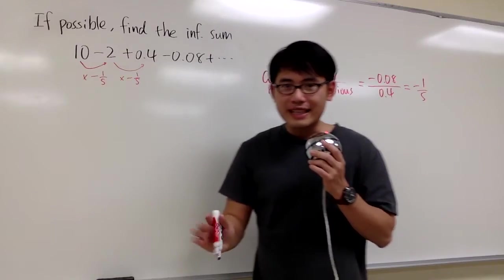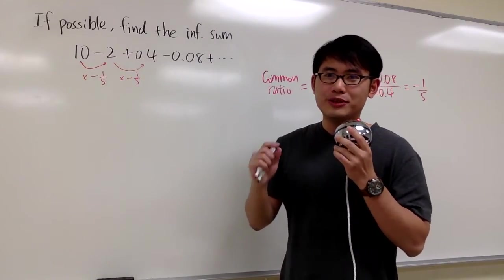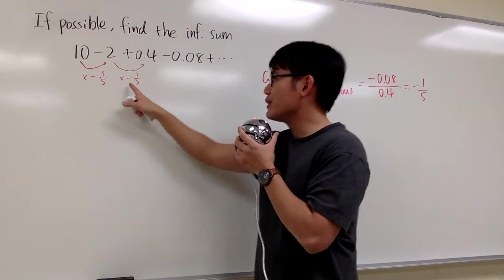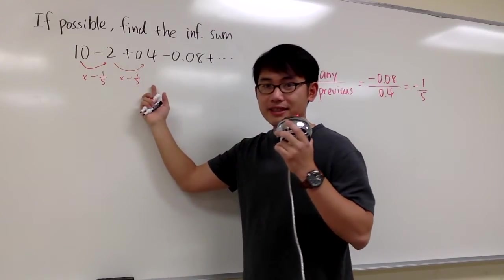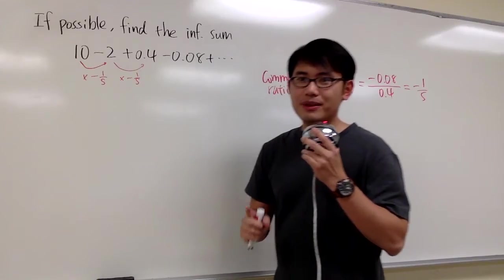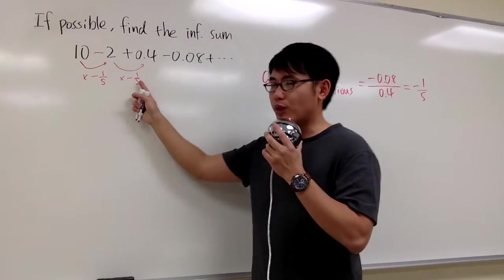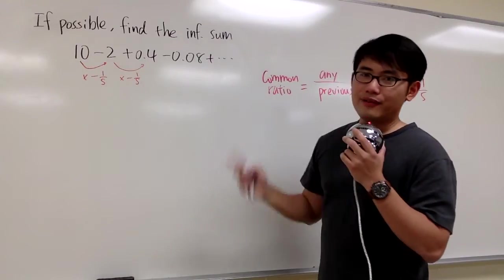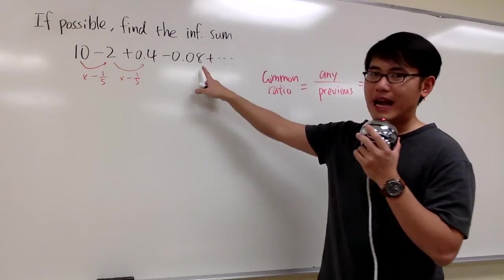We know that this is an infinite geometry series. Do we know if there's a sum for this? We have to look at the common ratio, which is negative 1 fifth. That's good, because the absolute value of negative 1 fifth is less than 1, therefore this series converges and we have a formula to add this up.